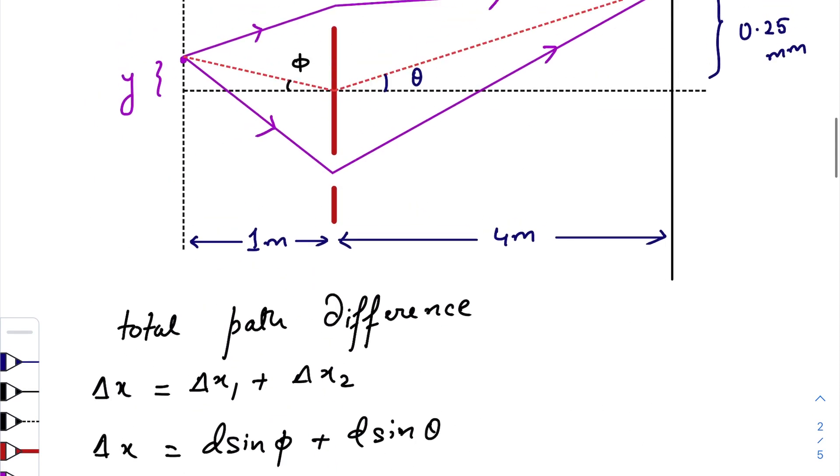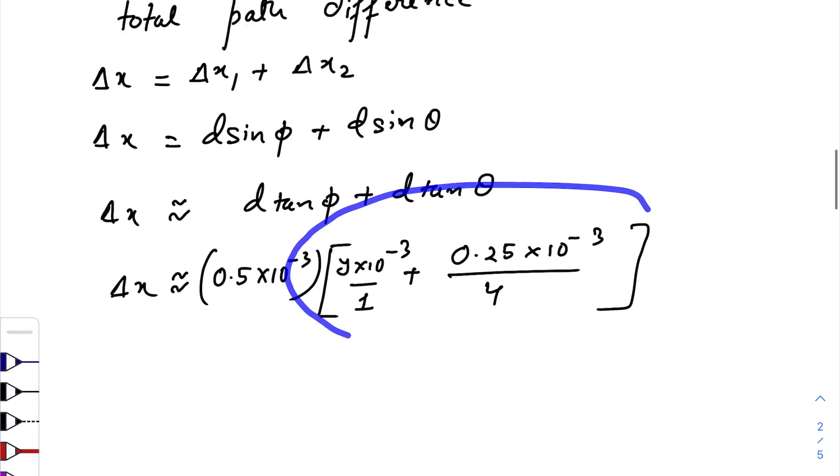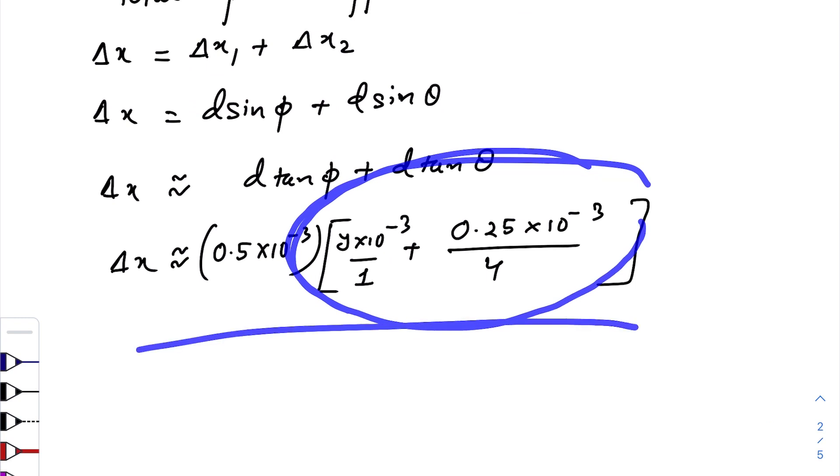What is tan phi? Tan phi is y times 10 to the power minus 3 meters divided by 1 meter. And tan theta is 0.25 times 10 to the power minus 3 meters divided by 4 meter. So this is the total path difference.